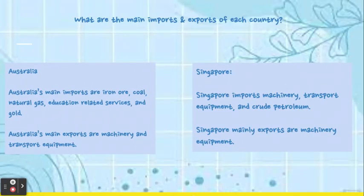The main imports of Australia are coal, natural gas, education-related services, and gold. The main exports of Australia are machinery and transport equipment.